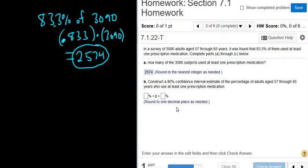Construct a 90% confidence interval estimate of the percentage of adults aged 57 through 85 years who use at least one prescription medication. So this question is asking us to construct a 90% confidence interval for the percentage of the adults, of all adults in this age range who use at least one prescription medication.